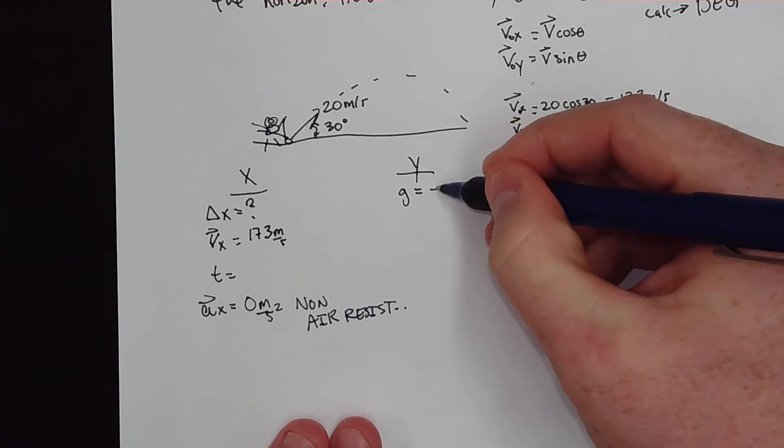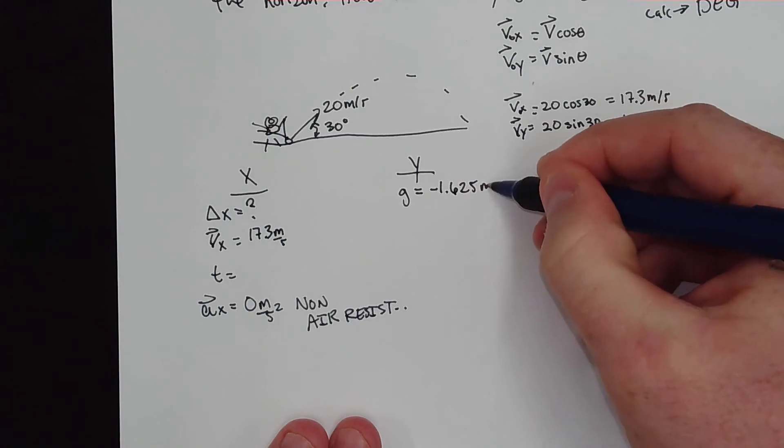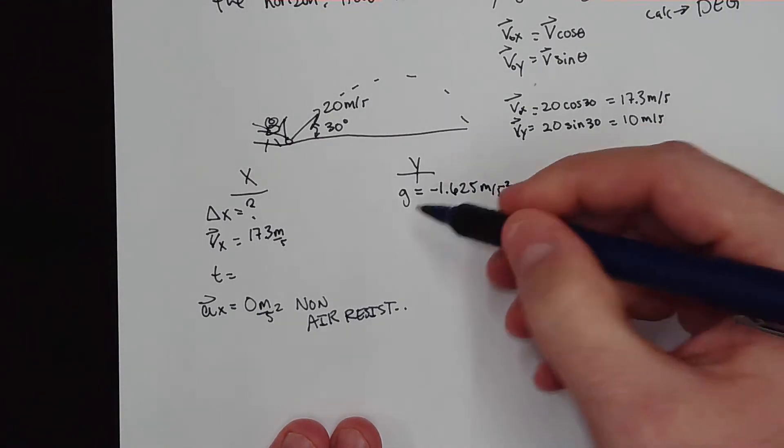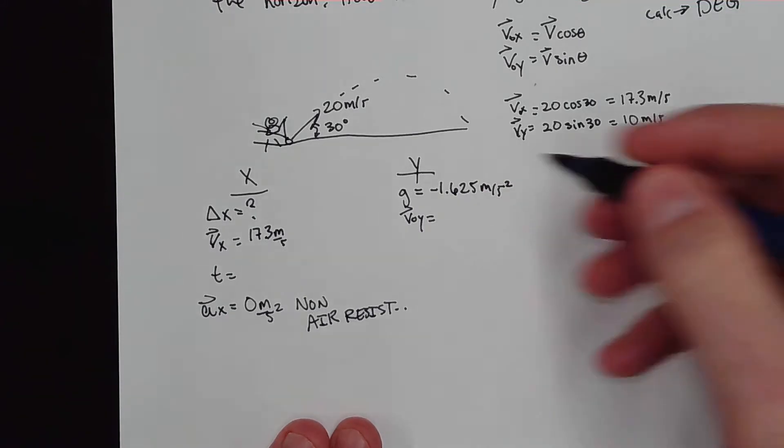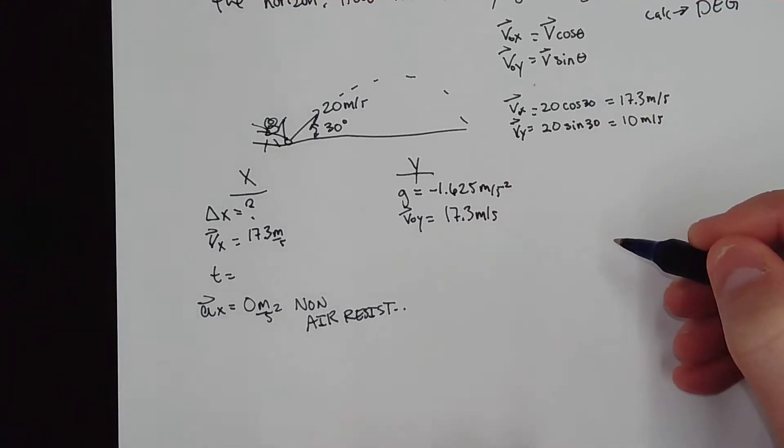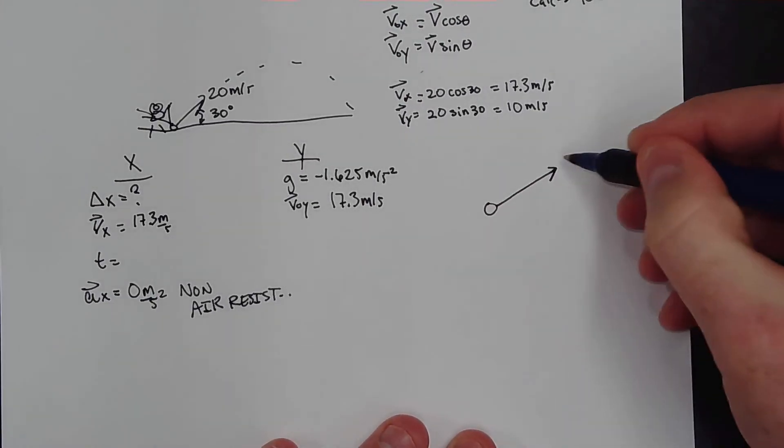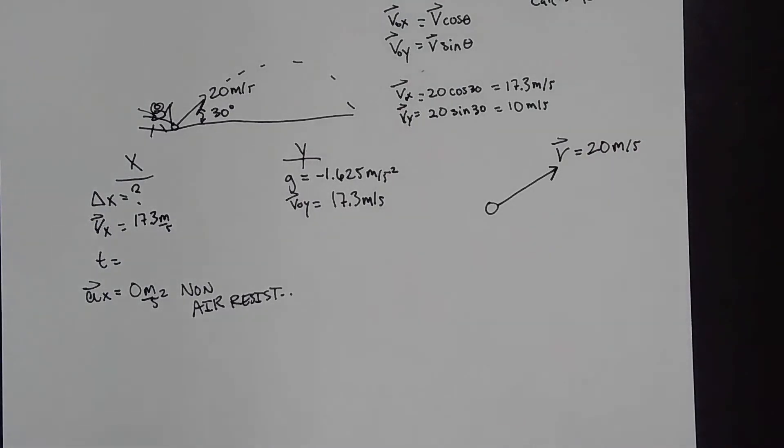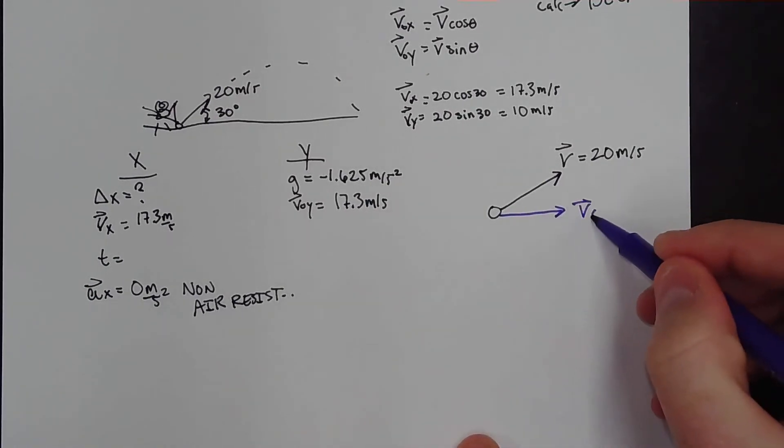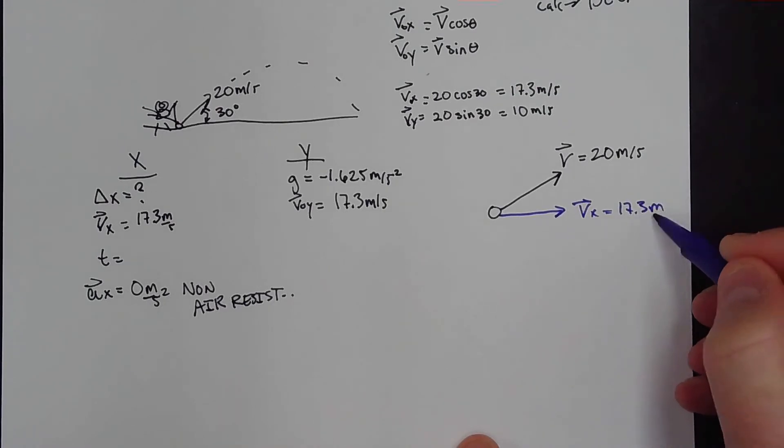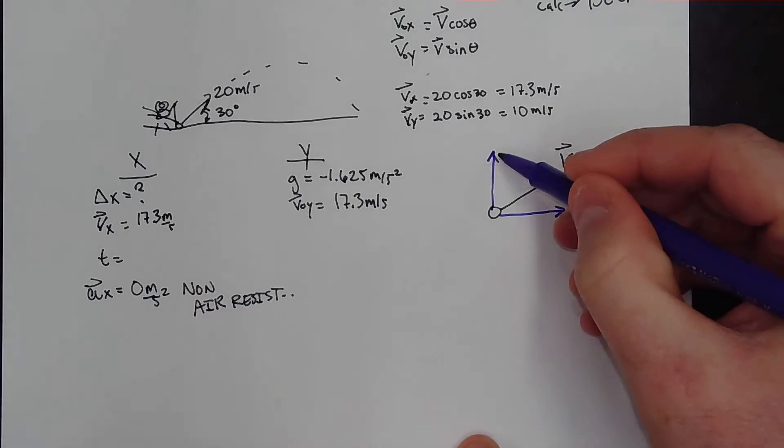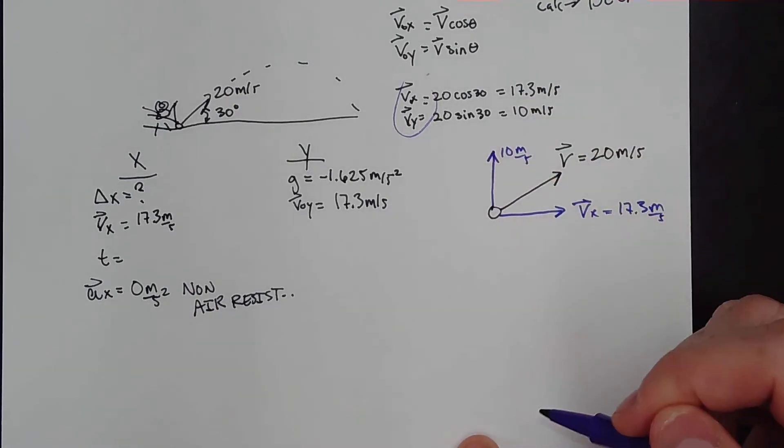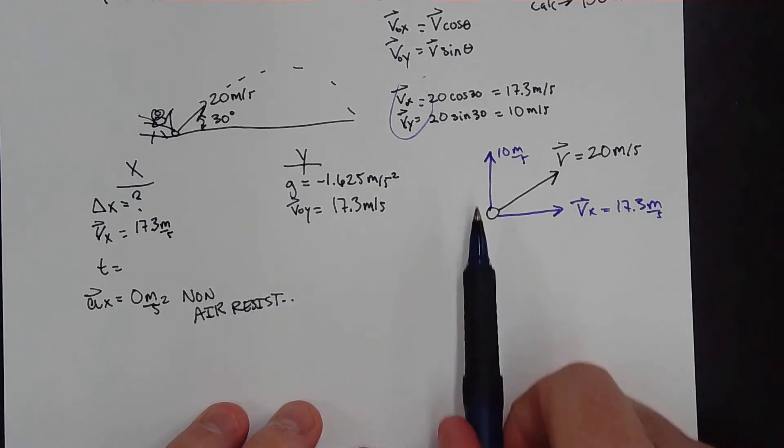So let's go over to the y direction. Now, we are on the moon. So it's negative 1.625 meters per second squared. And if you do that, it's actually about 1/6 the actual acceleration of gravity that we feel on Earth. Just to re-illustrate, if you draw this V, this V right here is how fast Commander Shepard hit that golf ball. And these other components that we found are how fast it's going in the x direction, 17.3, and how fast it's going straight up in the y direction, which is 10 meters per second. That is why we do this right here. Remember, the kinematic equations that we use only work for perfectly horizontal or perfectly vertical directions.